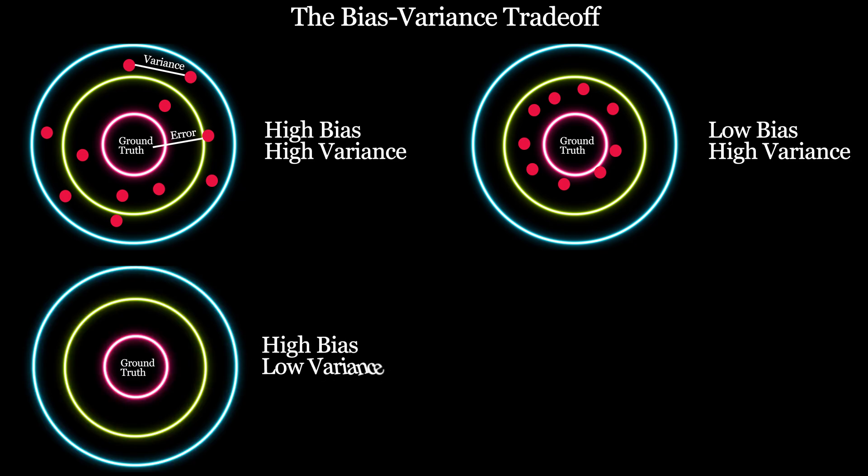Third case: a model with high bias but low variance. High bias will increase training error, but the model will be less inconsistent in prediction due to low variance.